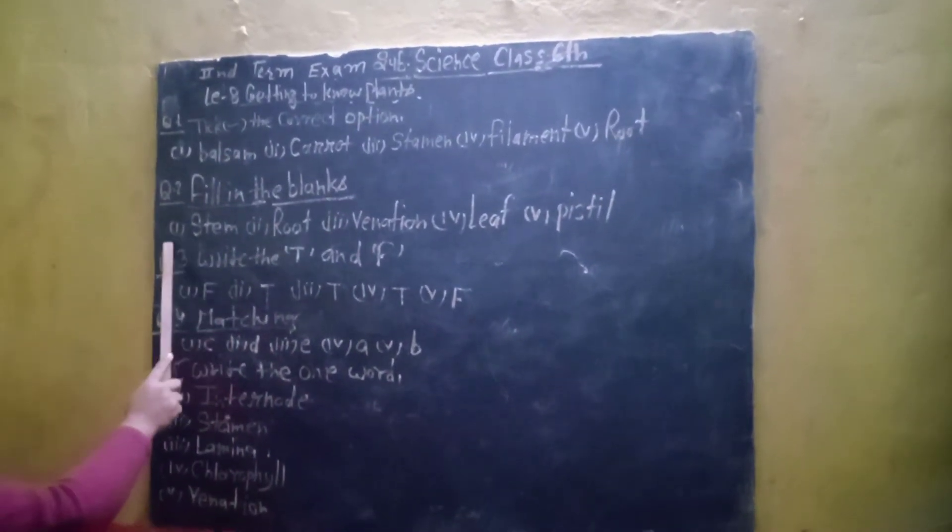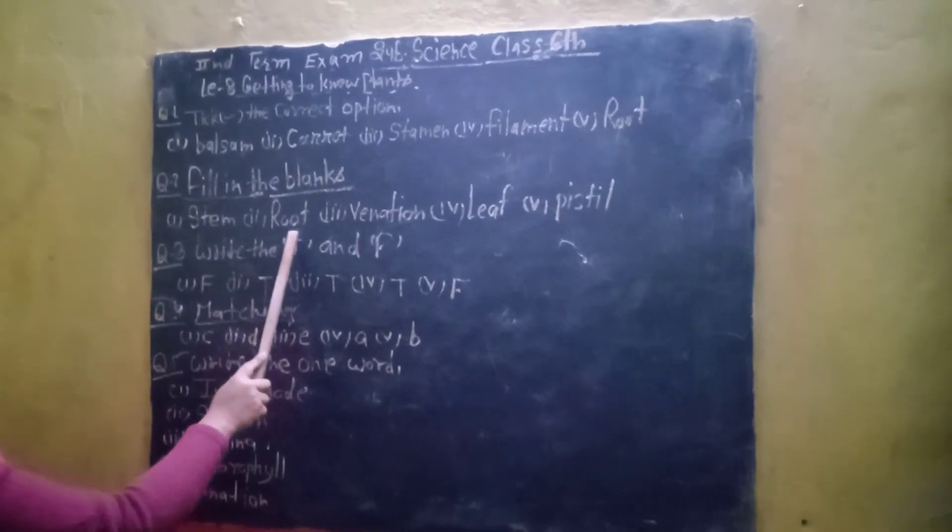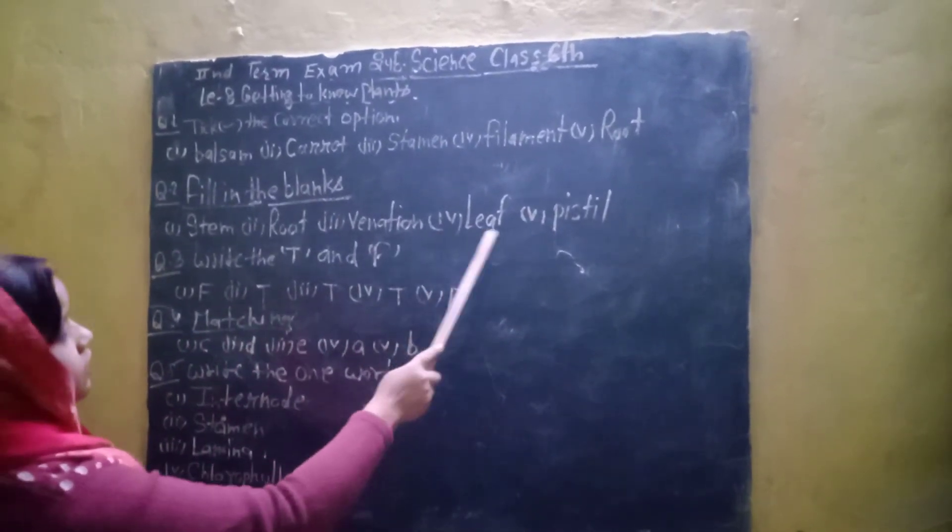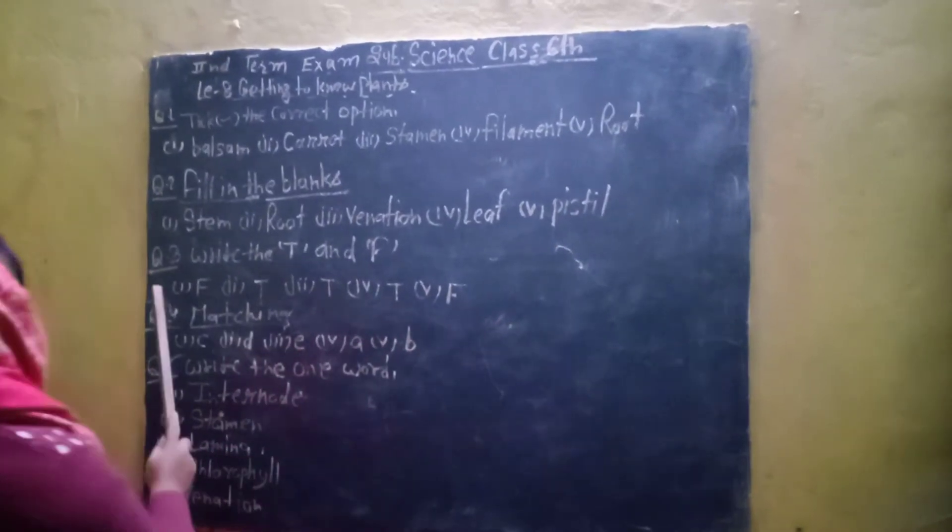Question No. 2 Fill in the Blanks. First Me Stem, Second Me Root, Third Me Venation, Four Me Leaf, Five Me Still.